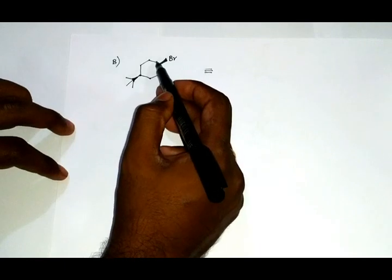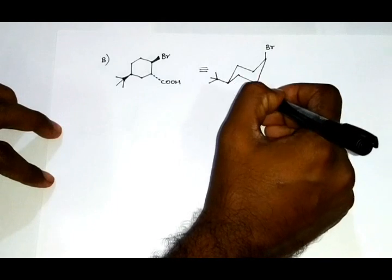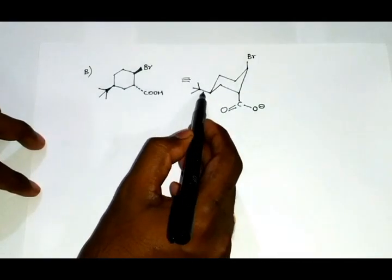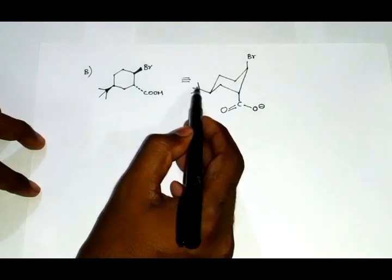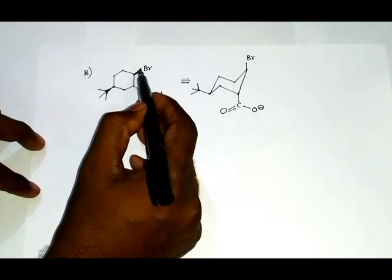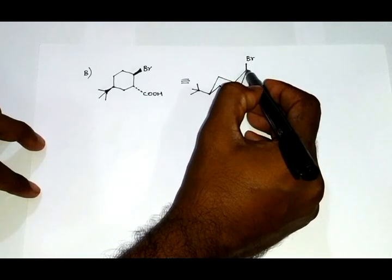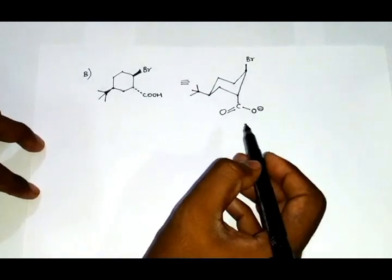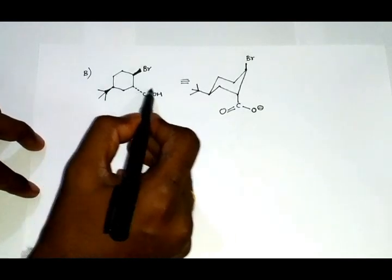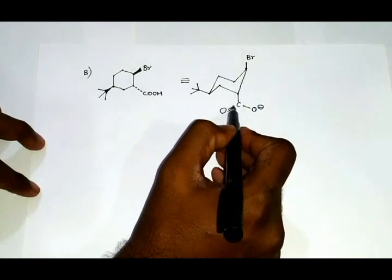For reaction B, this is the reactant. We can draw the equivalent chair form of this cyclohexane ring. Again, the tertiary butyl group is given the equatorial position since it is shown above the plane of the paper. The bromine group here is also shown above the plane of the paper, so it is given the axial position. The carboxylic group here is shown below the plane of the paper, so it is given the axial position as well.